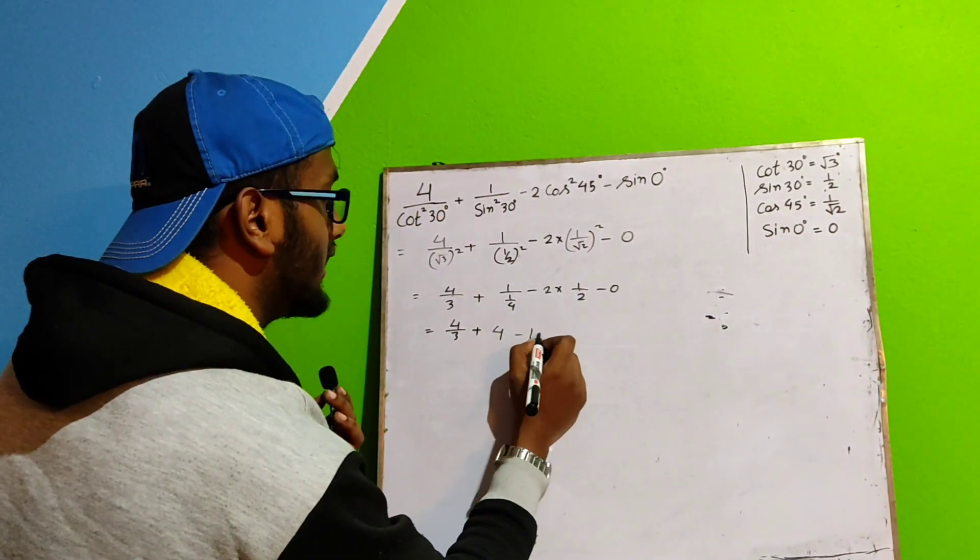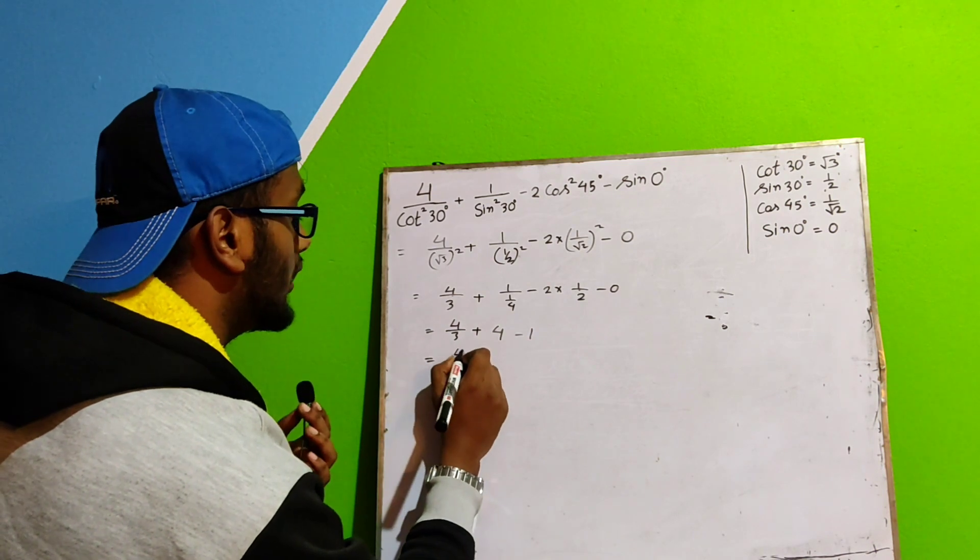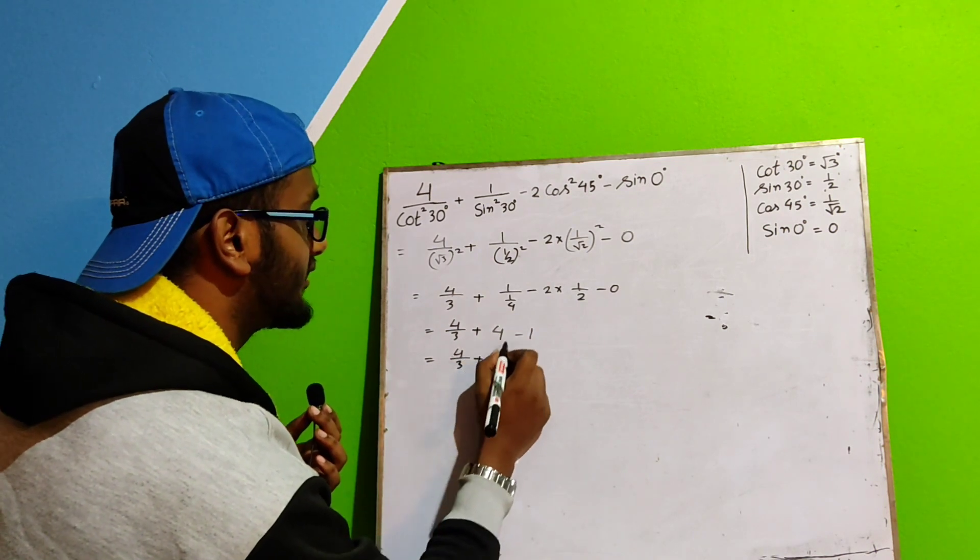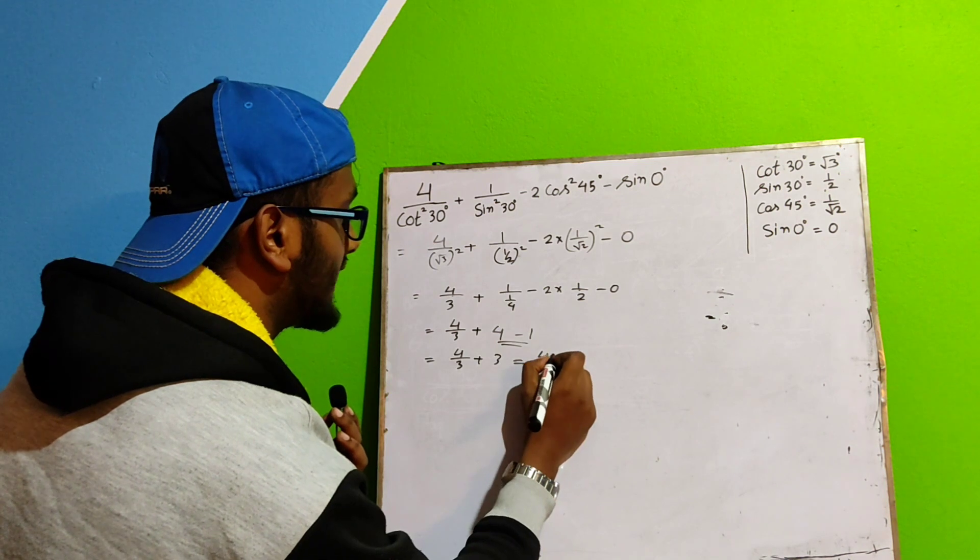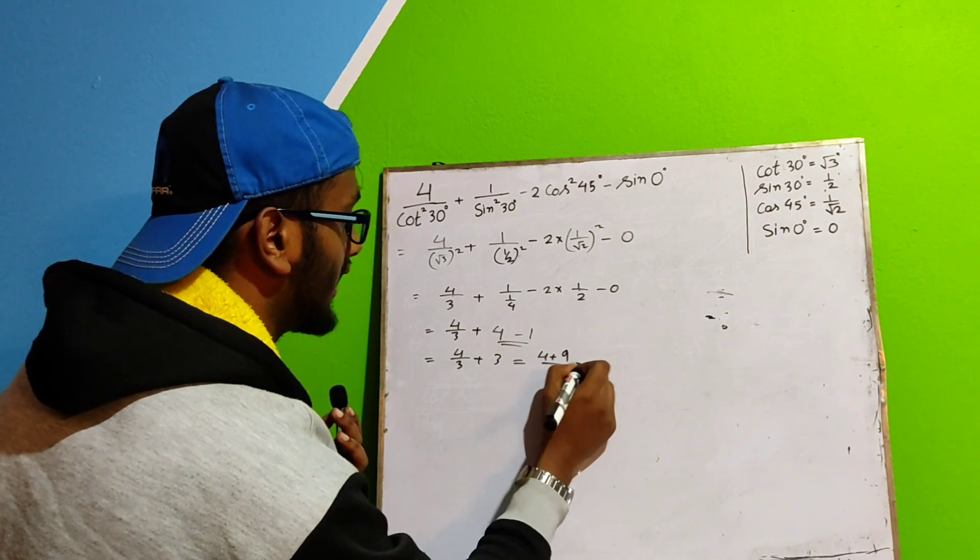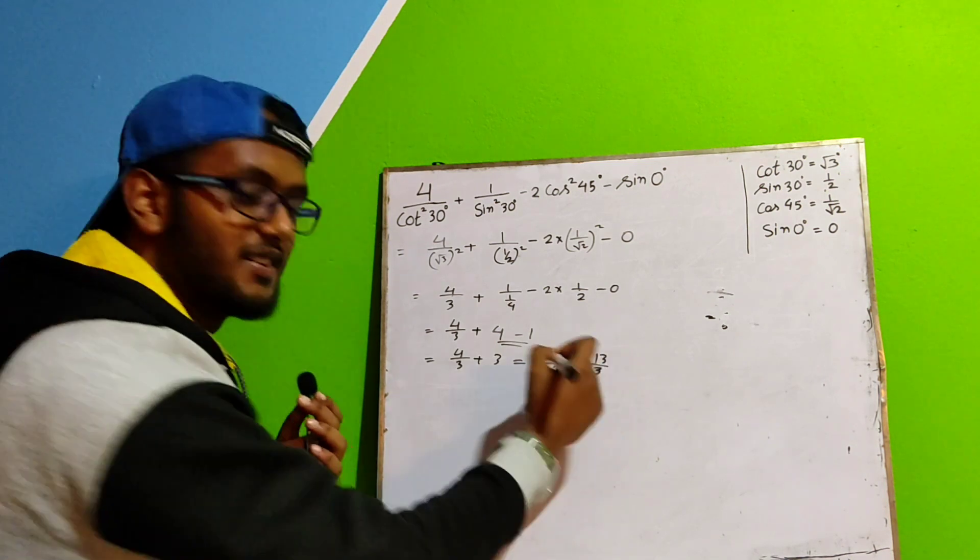So here, this one is 4 minus 1. Now, 4 by 3 plus 3. So on taking LCM, it will become 9 by 3 and it will be 13 by 3.